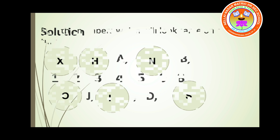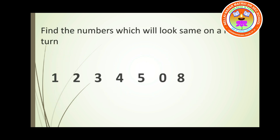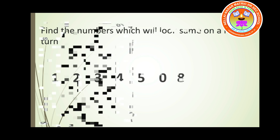Shall we move on to the third question? Question number 3: find the numbers which will look the same on a half turn. In the previous question we learned about alphabets; in the first question we learned about shapes. Now we are going to learn about the rotation of numbers on a half turn. Let us move on to each number.